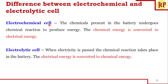First, let us understand the difference between electrochemical and electrolytic cell. In an electrochemical cell, the chemicals present inside the battery undergo chemical reaction to produce electricity — that is, chemical energy is converted to electrical energy. This happens during the discharging cycle of the battery.